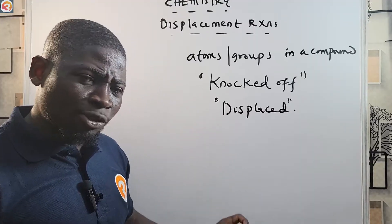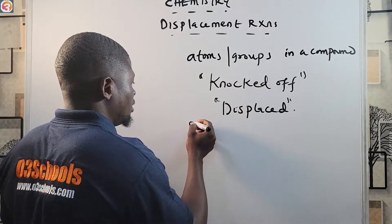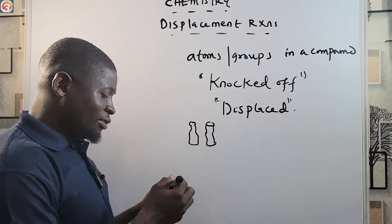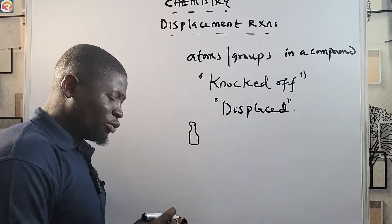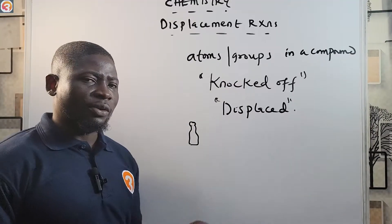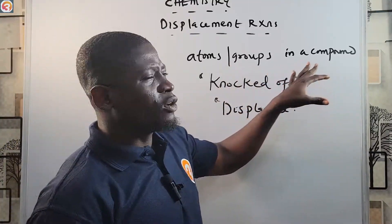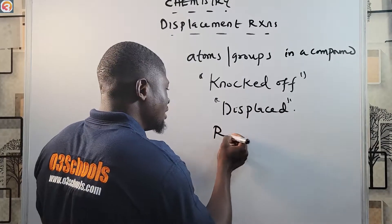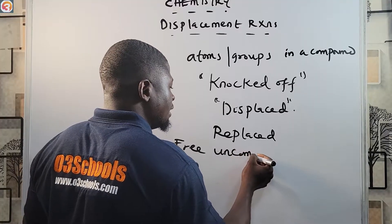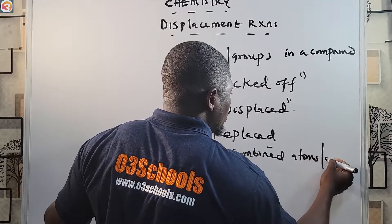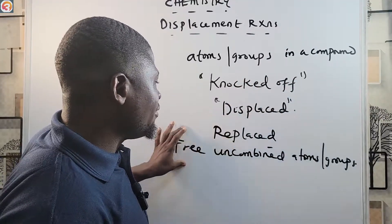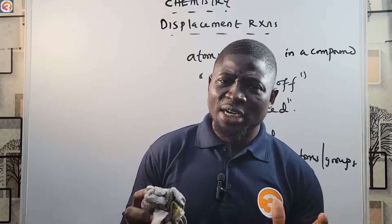To understand what 'knock off' means: imagine you have two bottles and one knocks the other off — that is, removing one from its position. Like in bowling, you knock some pins out of the way. So atoms or groups in the compound are knocked off or displaced, and they are then replaced by other free or uncombined atoms or groups. That is exactly what happens in a displacement reaction.